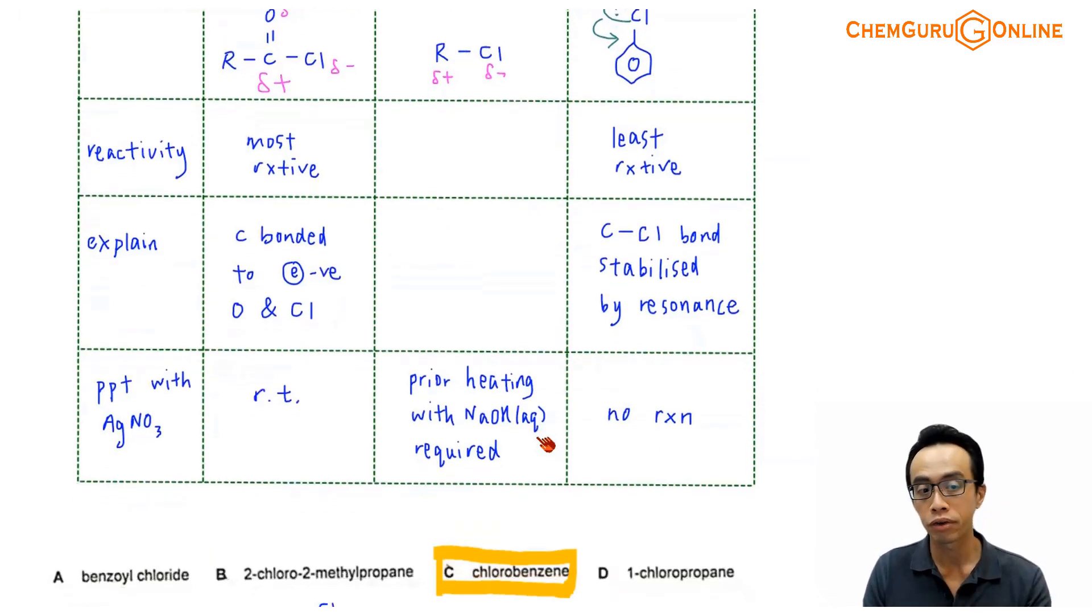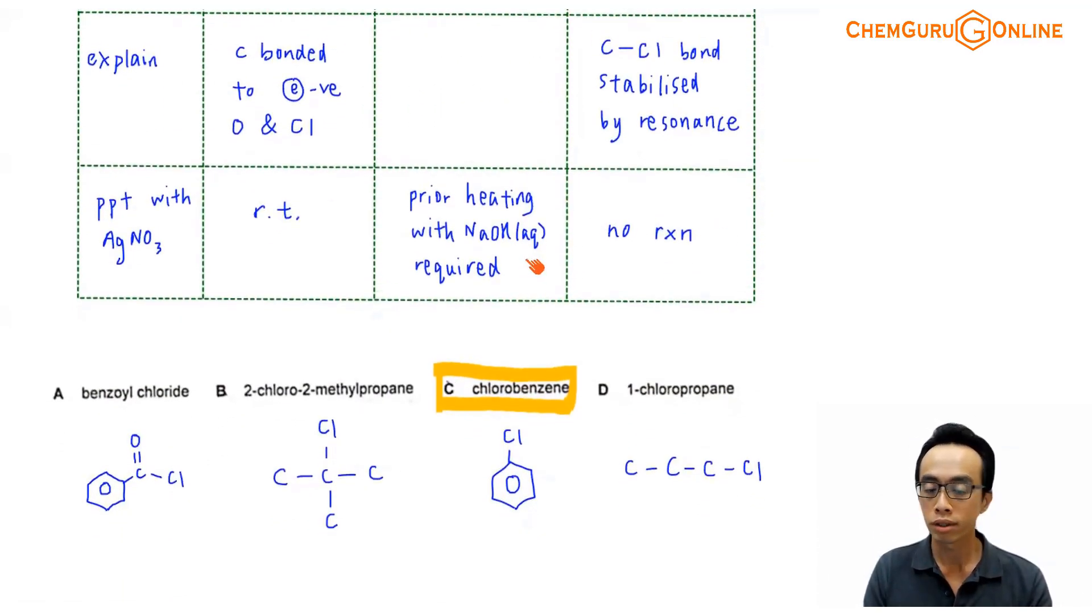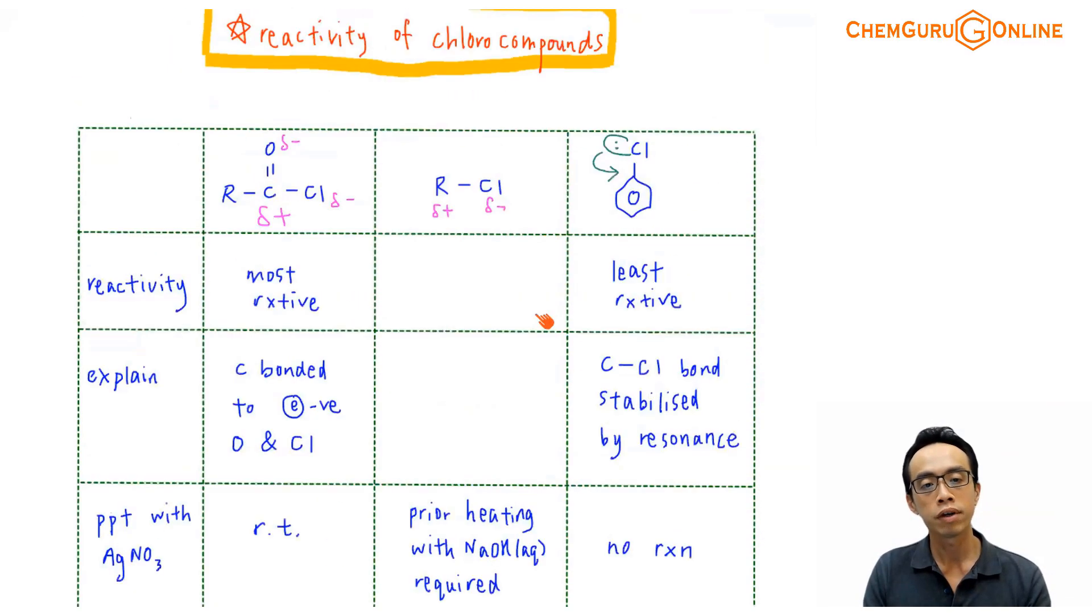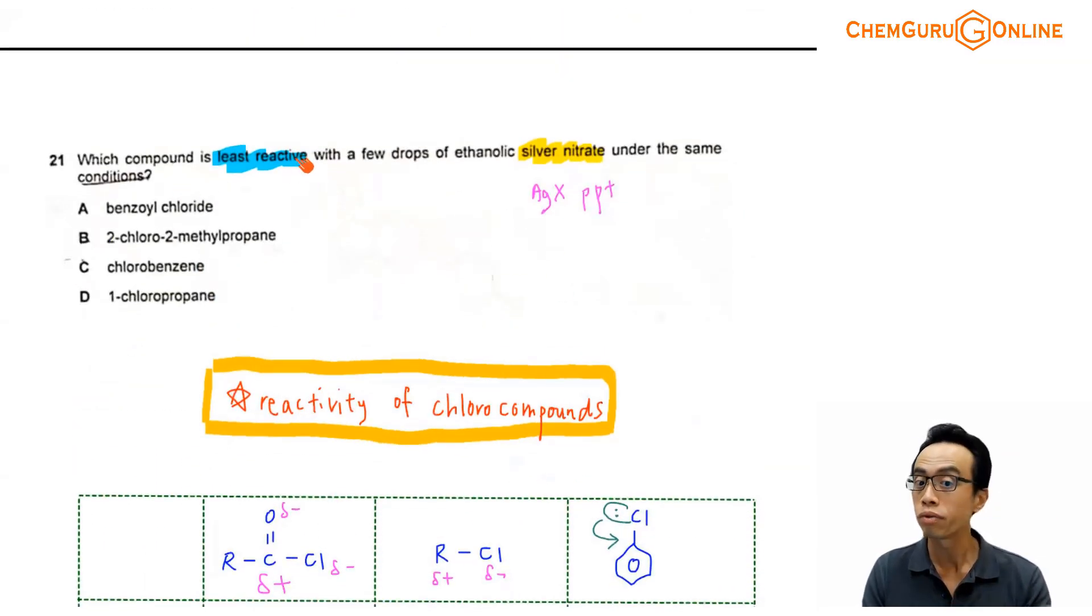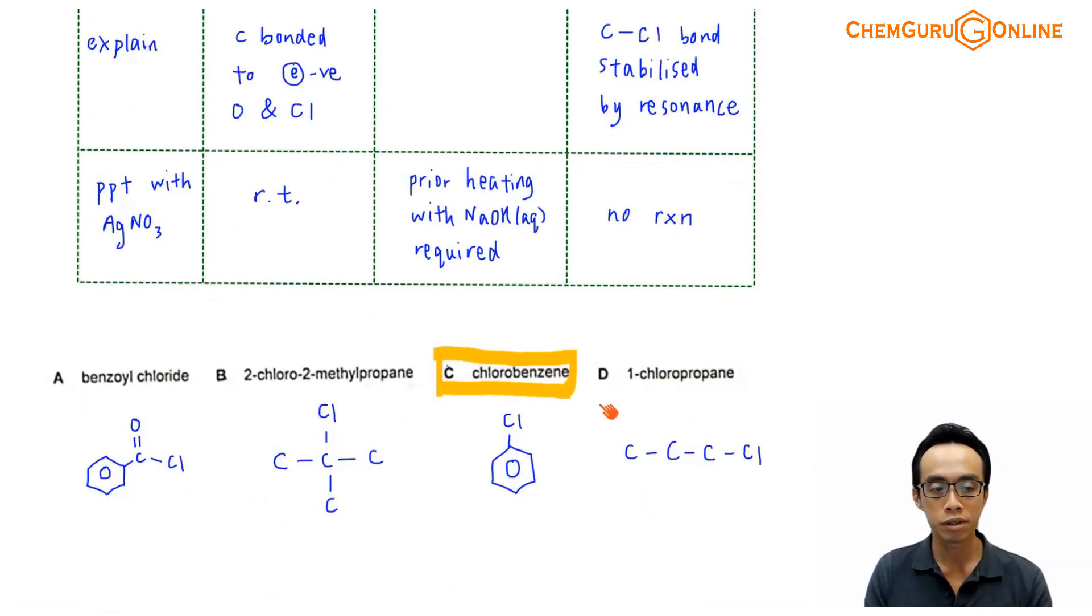So the difference in reactivity, we have talked about it. Let us come back to this exercise and we consider which one is the most stable. Involving what the question wants is, which one is the least reactive or the most stable? If I come back to my options A, B, C, D. Option A, benzoyl chloride, this is the acid chloride, so this guy should be the most reactive.